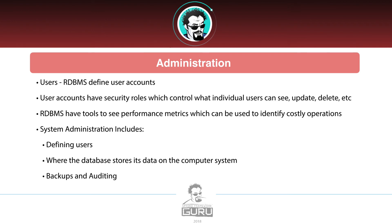System administration also covers backups and auditing. Backups involve backing up the database to a point-in-time state so you can restore it — and you don't always get a quiet spot on the database to do that. Auditing lets you see who's changing what and keeps an audit record, so if something goes wrong from an application standpoint, you have an audit trail to go back and look at.